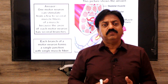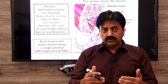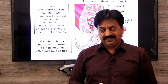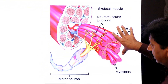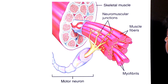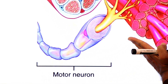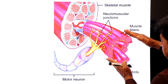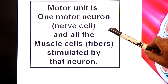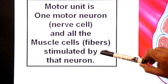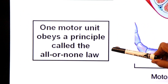This group is called a motor unit, and a motor unit obeys All or None Law. The definition of motor unit is: one motor neuron — one nerve cell — and all the muscle fibers stimulated by that single motor neuron. One motor unit obeys a principle called All or None Law.